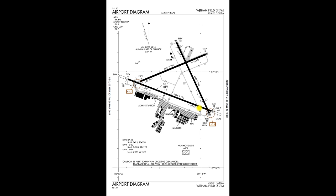Some other symbology on here includes displaced threshold markings we've talked about before, and the closed taxiway and closed runway — that's pavement that's just not used anymore. Then we have these EMAS markers at the end of each runway. EMAS is crushable concrete that if an aircraft drives over it, the aircraft sinks in and it helps decelerate it in the event of a runway overrun. So if you're going a little too fast and overshoot the end of the runway, it stops you before you hit whatever's on the other side — like a highway or a waterway.